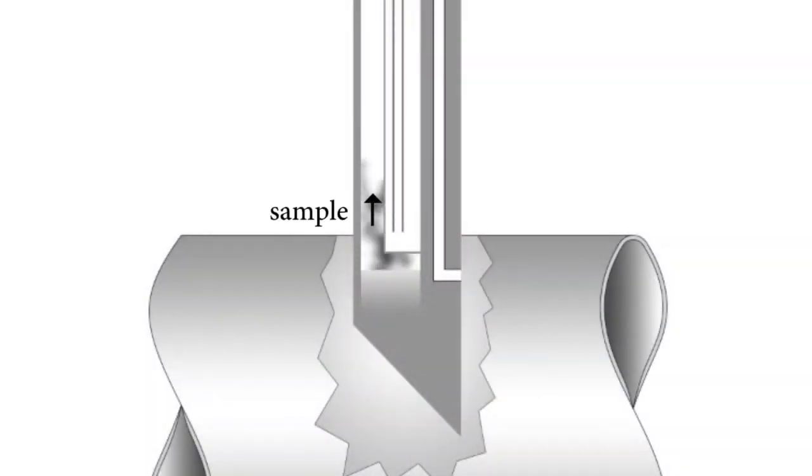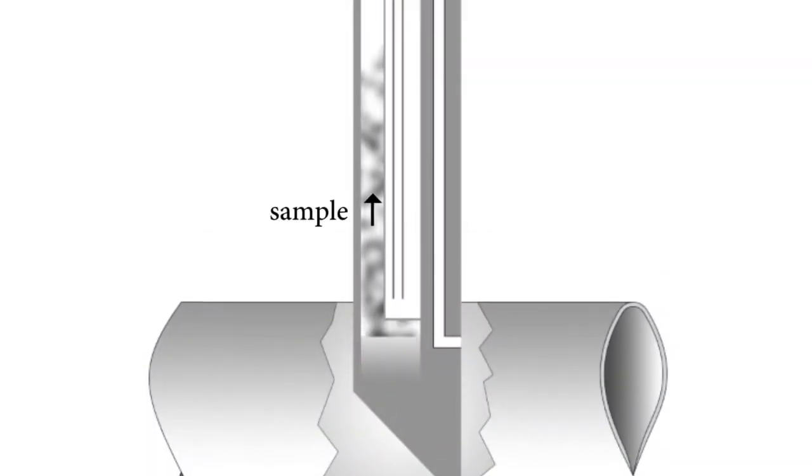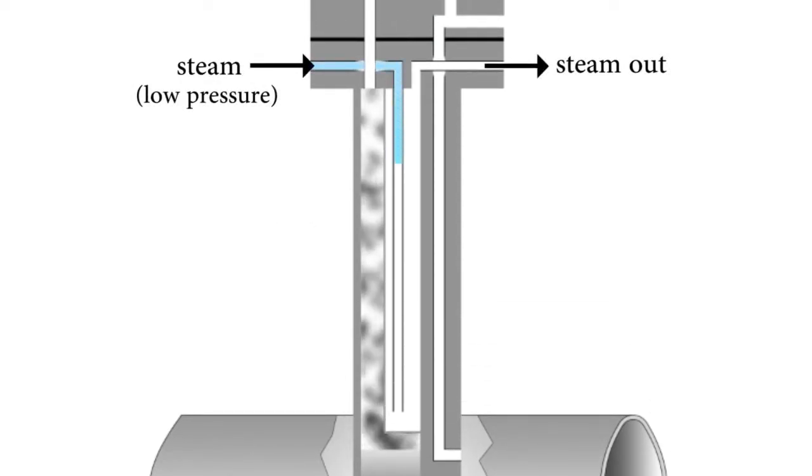Gas enters the angled inlet tip and gets pulled up the probe body by an aspirator. The design uses low pressure steam to actively condense elemental sulfur out of the sample in a controlled manner.